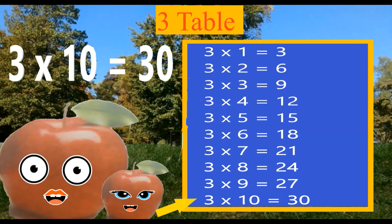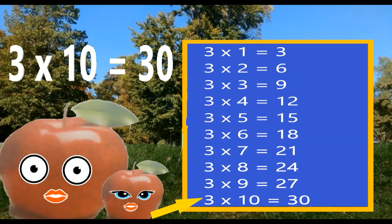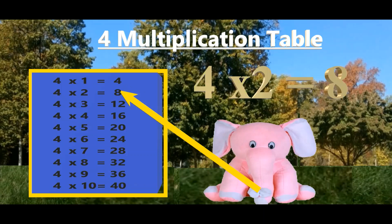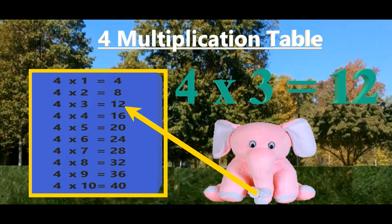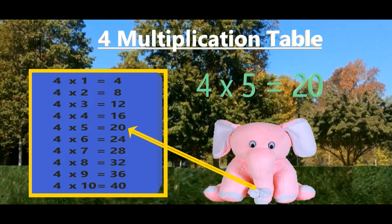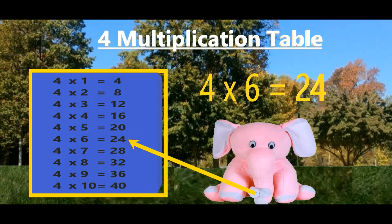Three tens are thirty. Four ones are four. Four twos are eight. Four threes are twelve. Four fours are sixteen. Four fives are twenty. Four sixes are twenty-four.